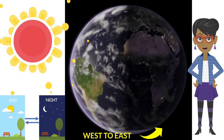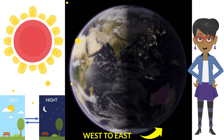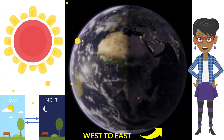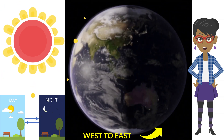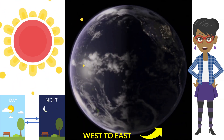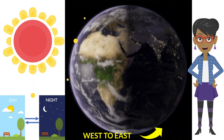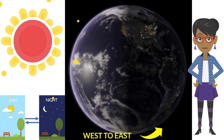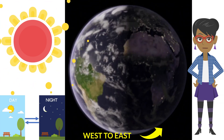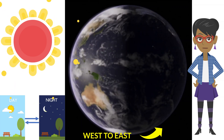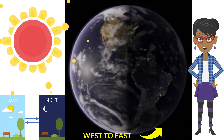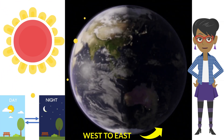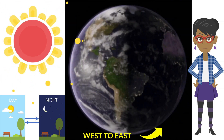Have you ever wondered why part of the world has daytime while the other part has nighttime? It takes 24 hours for the Earth to complete a full rotation on its axis. We call each 24-hour period one day, even though we experience both daytime and nighttime. At any moment, half of the world is in the daytime and half is in the nighttime. During daytime, your part of the Earth is facing the Sun. As the Earth rotates, you move away from the Sun until eventually the Sun is no longer visible. For you, this is now nighttime, but for the other side of the planet, day has just begun.